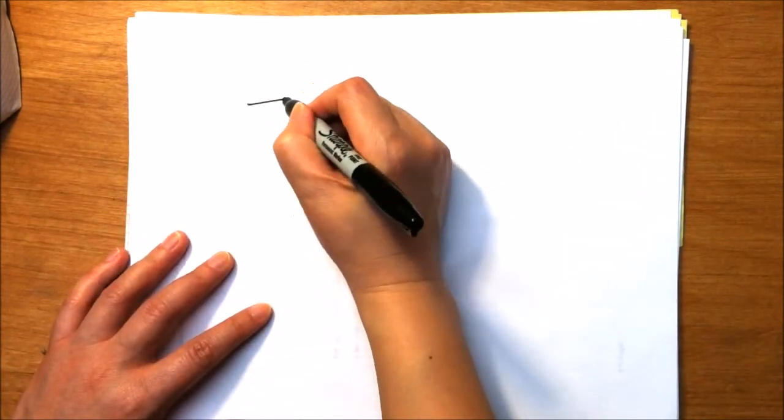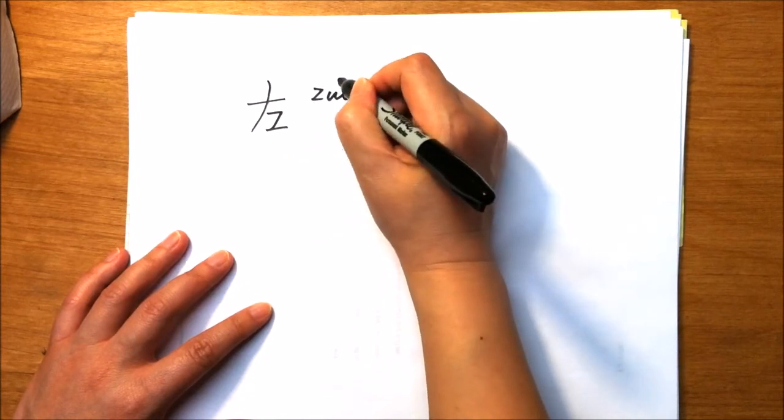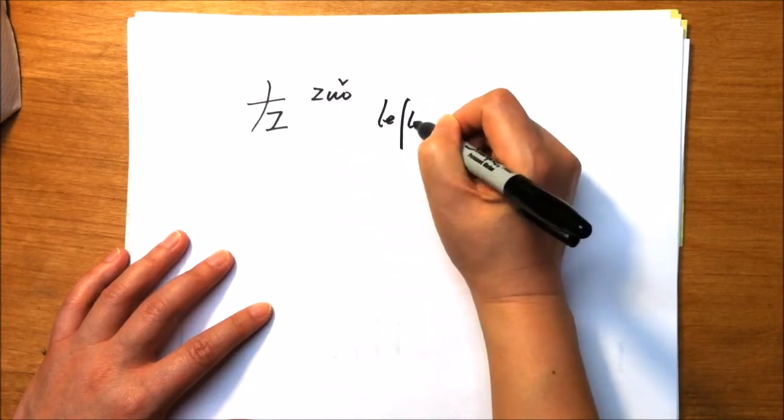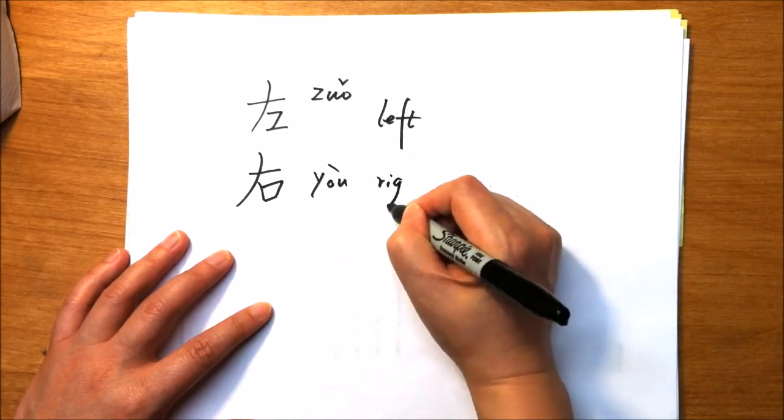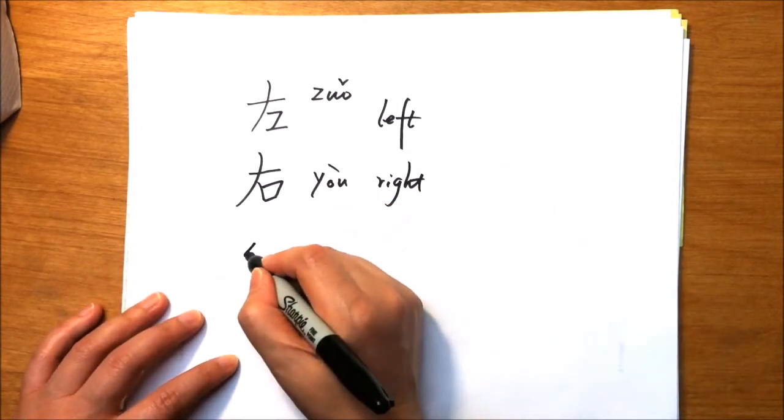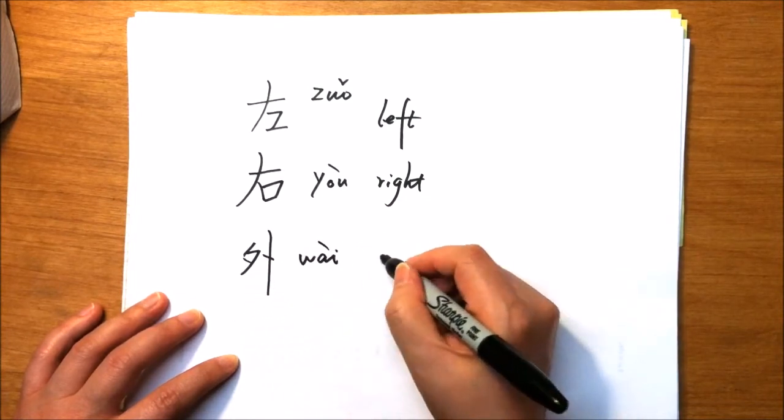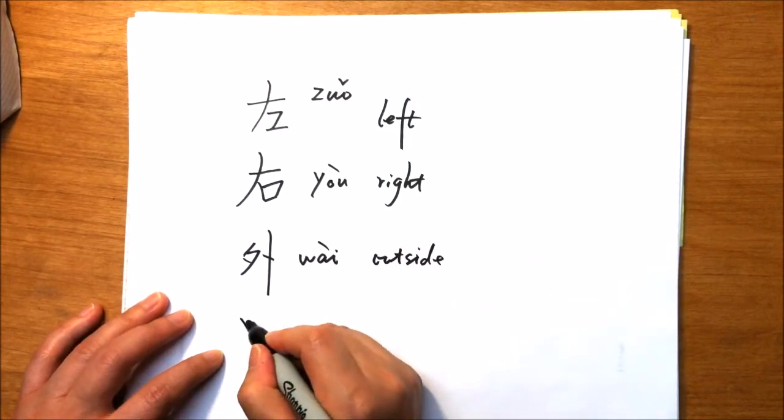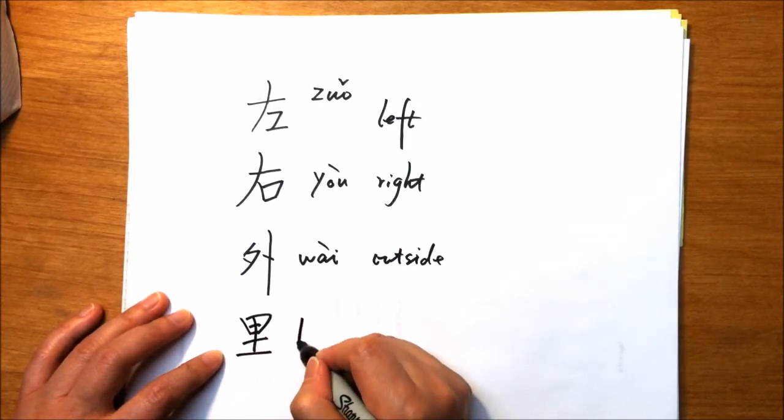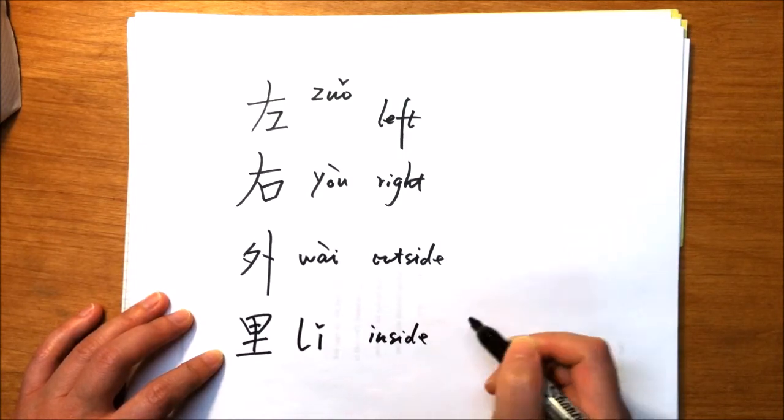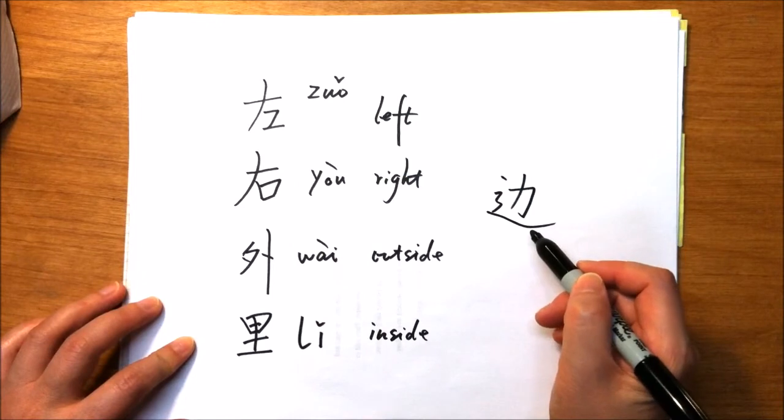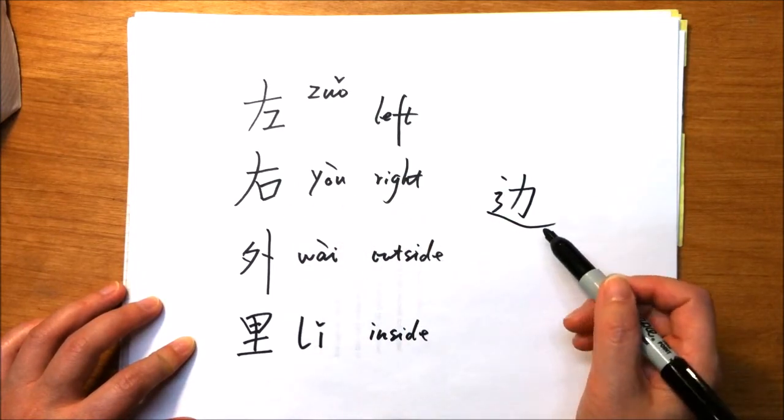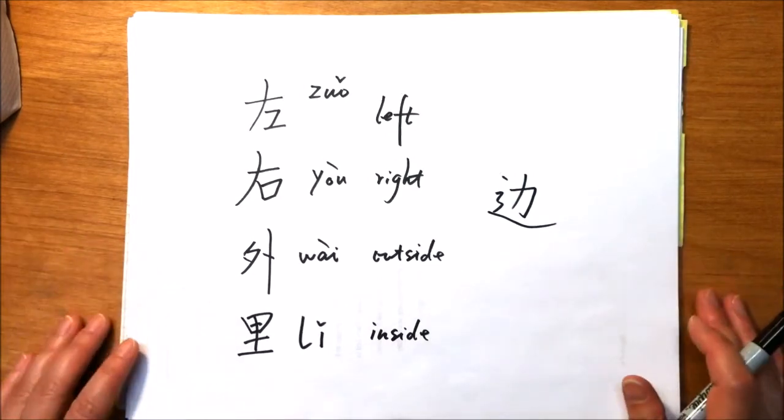Here are more words that describe location or direction. 左, left. 右, right. 外, outside. 里, inside. So we add the suffix 边 and we get the words 左边, 右边, 外边, 里边. All those words are used to describe location.